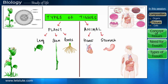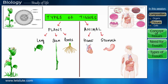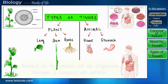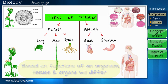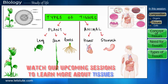Due to these differences in plants and animals, their tissues will also differ. To sum it up, based on the activities carried out by an organism the organs will differ, and hence the type of tissues. In our upcoming session we will be studying the individual plant and animal tissues in more detail.